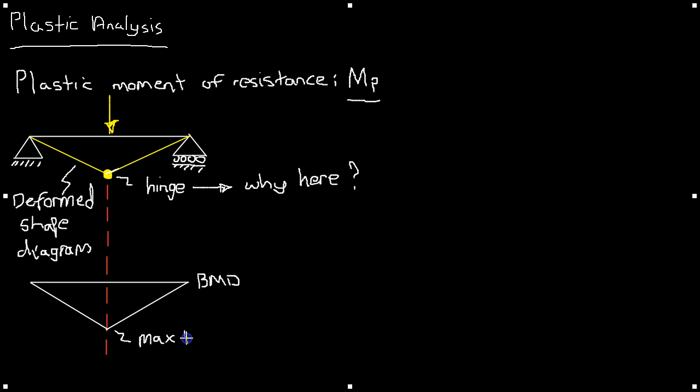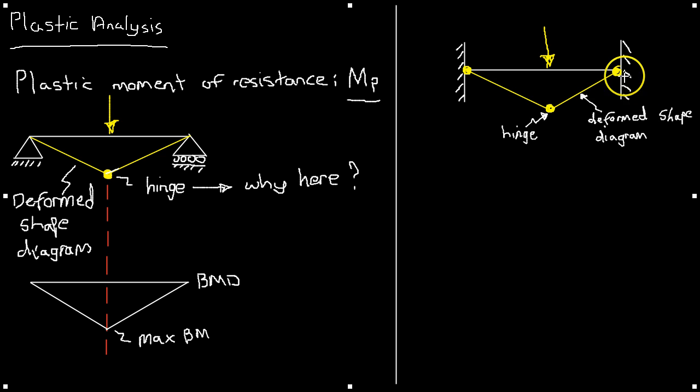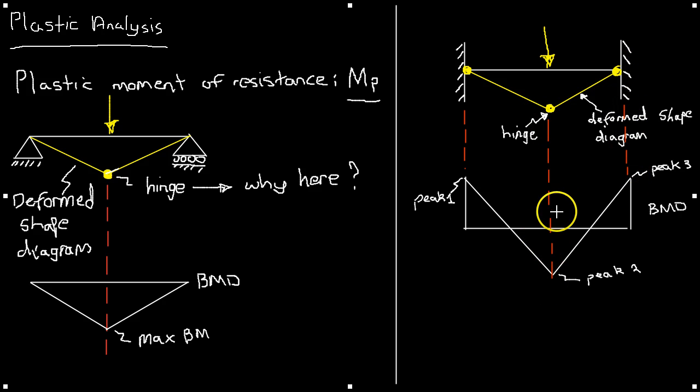So if we just quickly look at say a fixed end beam like this, I can tell you that for this beam to completely collapse three hinges must form. Why must three hinges form? Again looking at the bending moment diagram we can see that there are three peaks in the bending moment diagram and plastic hinges form at these peaks when a beam undergoes complete collapse.